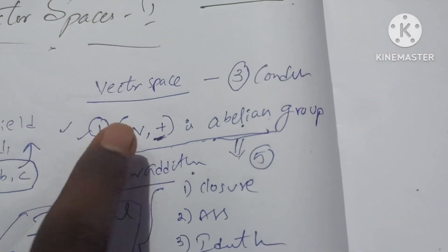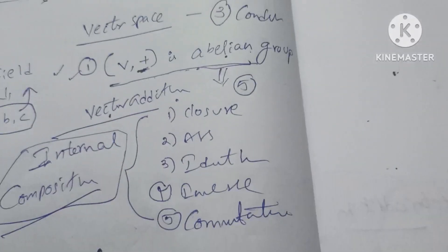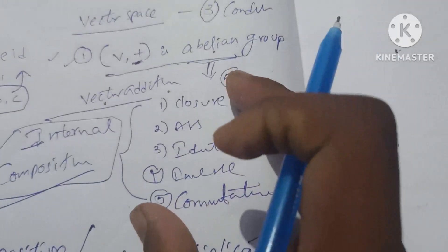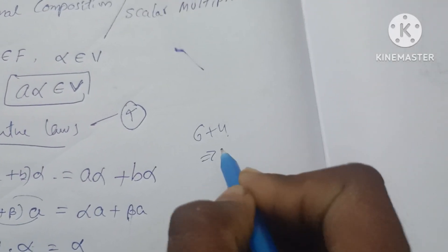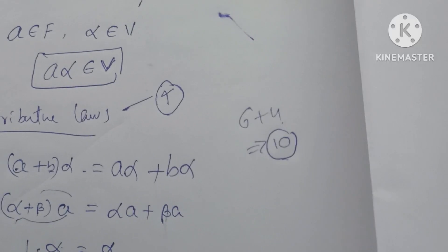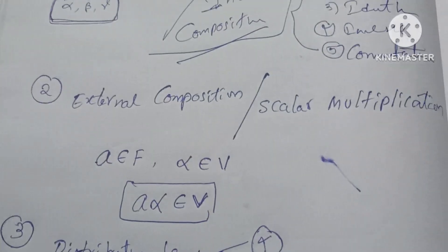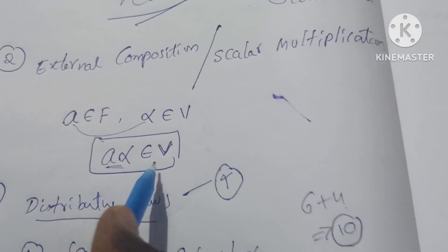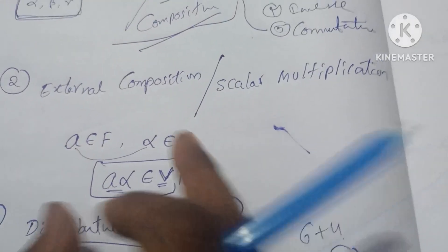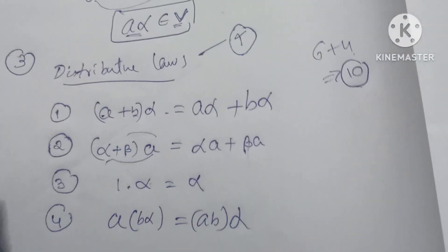So mainly, vector space has 3 conditions. The first condition — vector with respect to addition is an abelian group — has 5 laws. The second condition is external composition with 1 condition, and the third condition is distributive laws with 4 conditions. So 5 plus 1 plus 4 gives us a total of 10 conditions. The second condition: if you have an element in a field and multiply it by an element in a vector, you get a product in a vector — this is external composition.